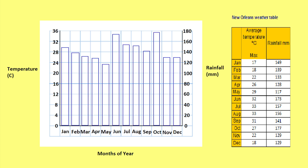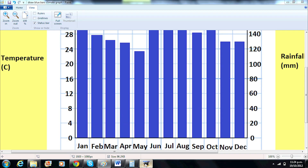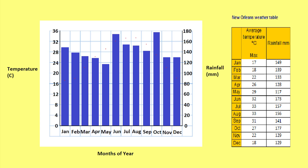Now we will draw bars for the rainfall and colour them in blue. Now we will use a red pen to plot the temperature data. Make sure we centre the dots in between each bar before connecting them to turn it into a line graph.